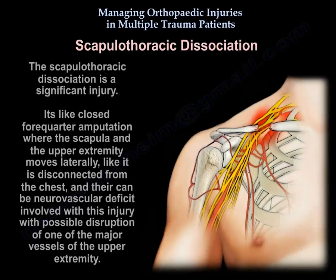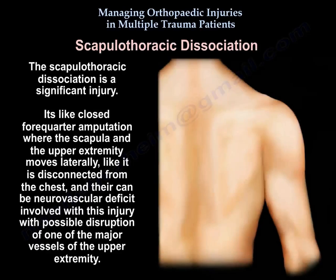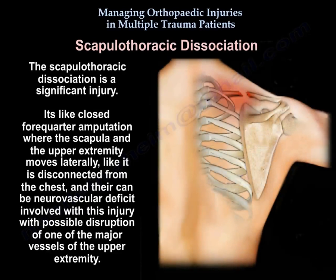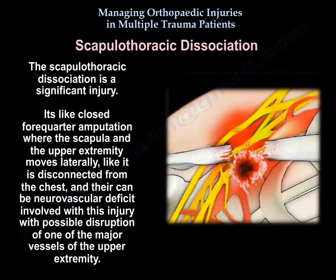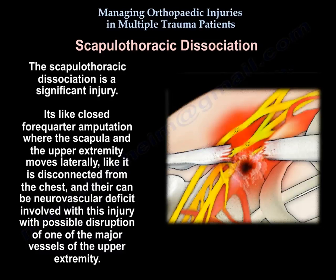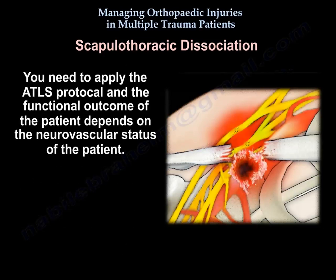Scapulothoracic dissociation is a significant injury — it is like a closed forequarter amputation where the scapula and upper extremity move laterally, disconnected from the chest. There can be a neurovascular deficit with possible disruption of a major vessel of the upper extremity. Apply the ATLS protocol; the functional outcome depends on the neurovascular status of the patient.